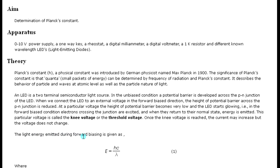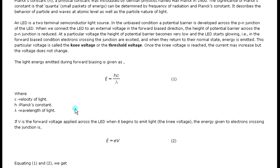The light energy emitted during the forward bias is given by E equals h nu where nu equals c upon lambda. If V is the forward voltage applied across the LED when it begins to emit light, the knee voltage, the energy given to electrons crossing the junction is E equals eV. When the LED starts to glow, these two energies are equal.